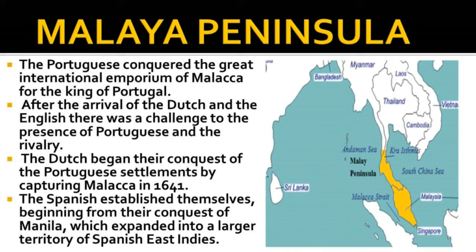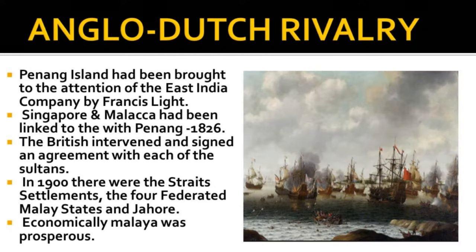Malaya Peninsula: When European traders crossed the Indian Ocean at the close of the 15th century, they came for the spices of Southeast Asia. The Portuguese soldier who conquered Goa and Malacca and his successors were interested in the spice trade. After the arrival of the Dutch and the English, there was a challenge to the Portuguese presence, and the rivalry of these three European powers dominated the 17th century. The Dutch began their conquest by capturing Malacca in 1641. The Spanish established themselves beginning from their conquest of Manila, which expanded into the larger territory of Spanish East Indies. Penang Highland had been brought to the attention of the East India Company by Francis Light. In 1786, the settlement of Georgetown was founded at the north-eastern tip of Penang Highland, marking the beginning of British expansion into the Malay Peninsula.